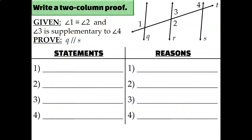This time we're given that angle one is congruent to angle two, and that angle three is supplementary to angle four. So I can label that angle one and two are congruent on my diagram, but unfortunately there's no symbol for labeling supplementary angles on a diagram.